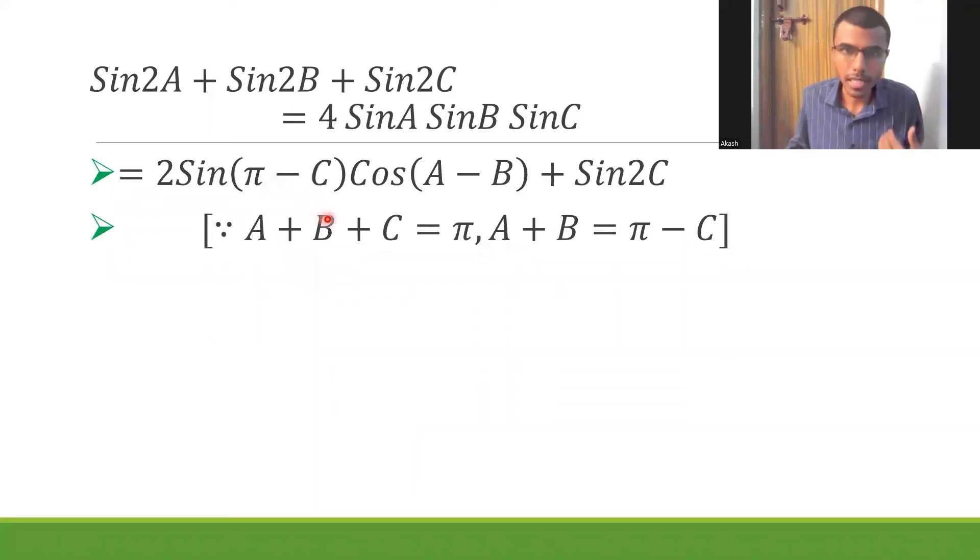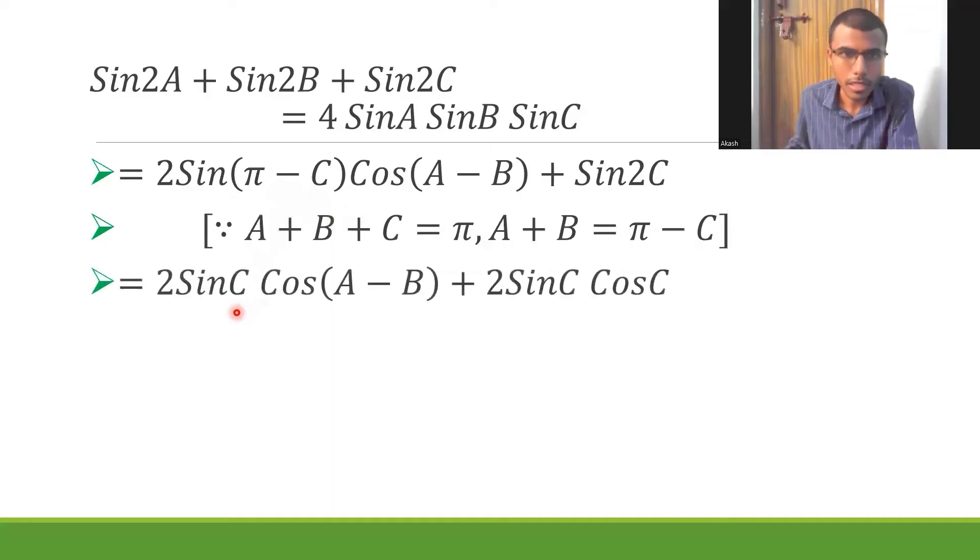Now sin(π-θ) is sinθ, so sin(π-C) is sinC. I'm left with 2sinC cos(A-B) + 2sinC cosC.